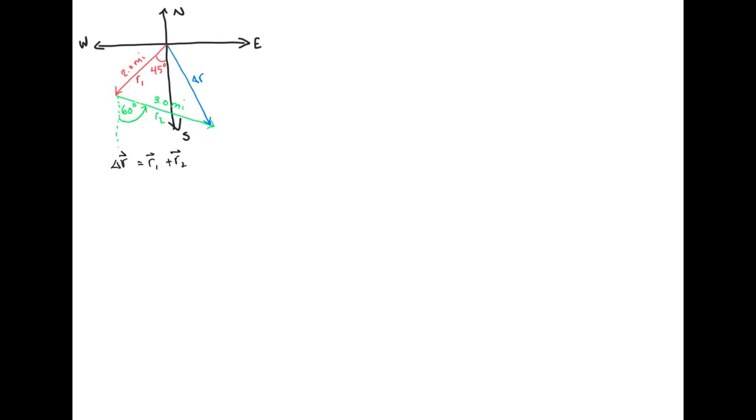These vectors were given in what is referred to as magnitude direction form, and to add them, they'll need to be in component form. So the first task will be to determine the components of r1 and r2.